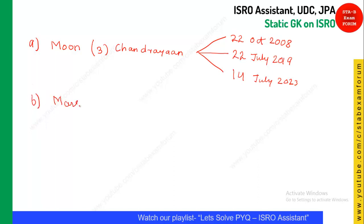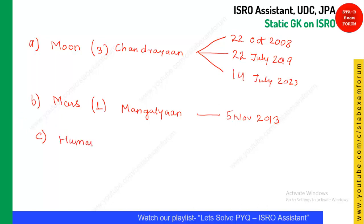The second exploration mission is Mars. ISRO's Mars mission is called Mangalyaan — 'Mangal' means Mars and 'yaan' means spacecraft. It was launched on 5th November 2013. The next important future mission is the human spaceflight program called Gaganyaan, which is expected to happen in the next one to two years.